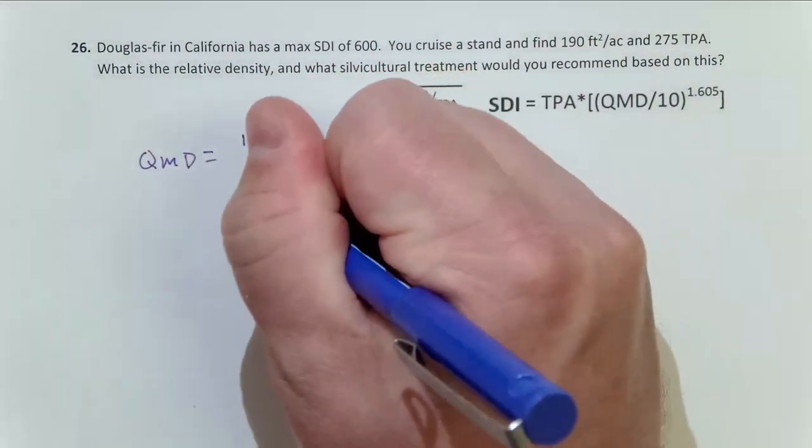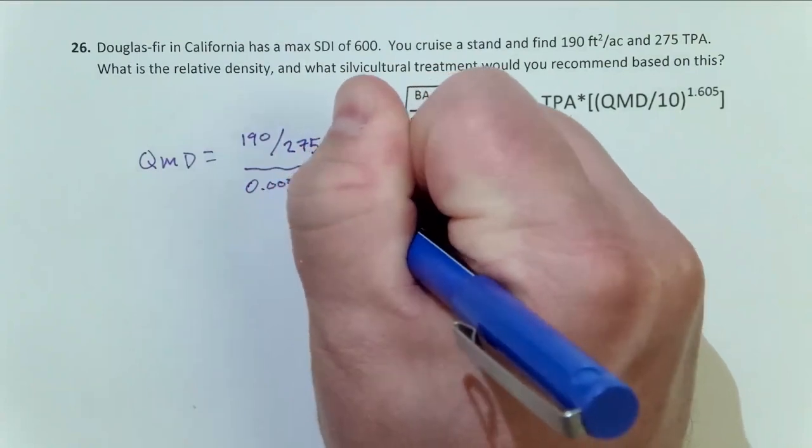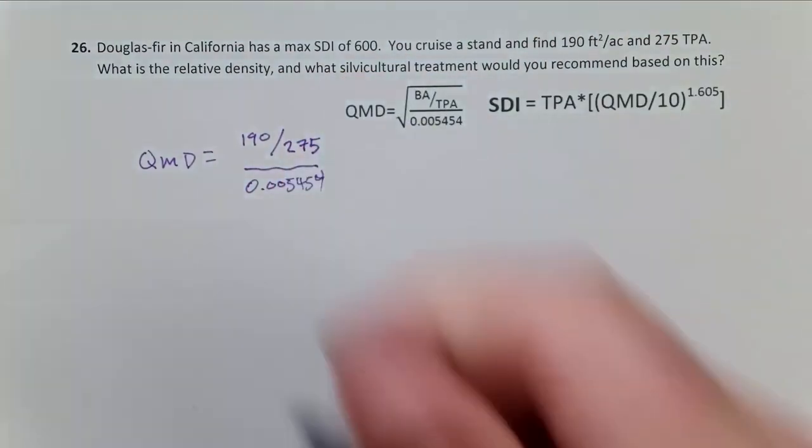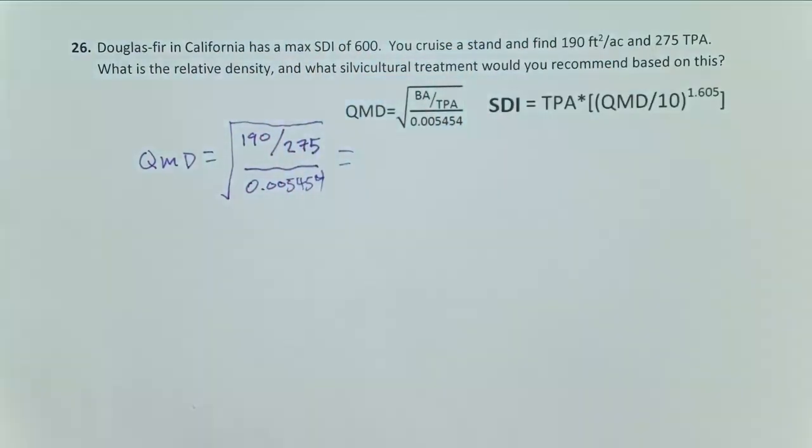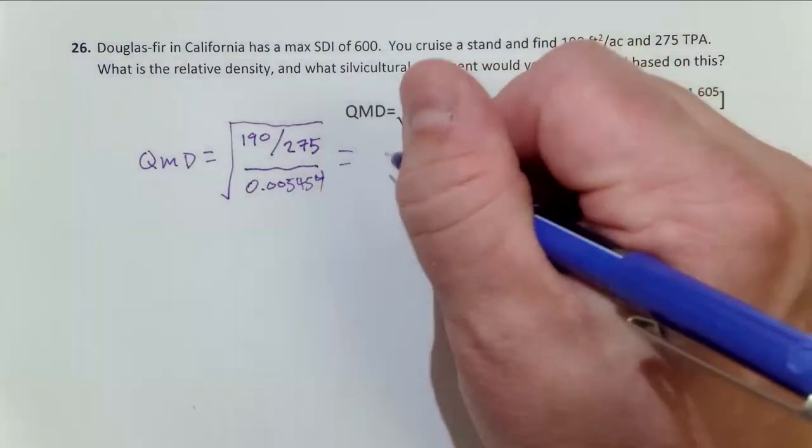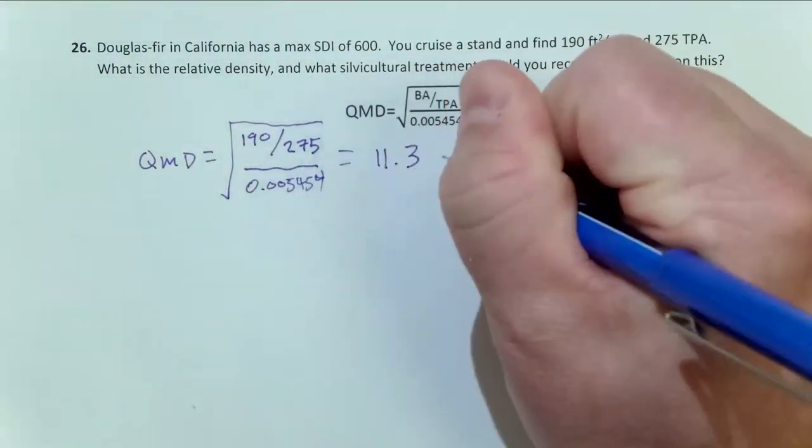Then we divide that by 0.005454, get that number, and then we take the square root of that. That's your correct order of operations, and when we look at what that's going to be, we find that our QMD in this example is 11.3 inches.